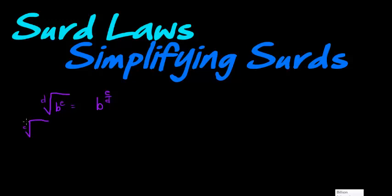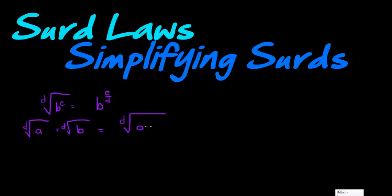CERD law 2 says: if I've got two radicals with inputs in the same radical being multiplied with a different input, then I can keep the same radical and just multiply the inputs. In other words, if the radical is the same, I can multiply the inputs.